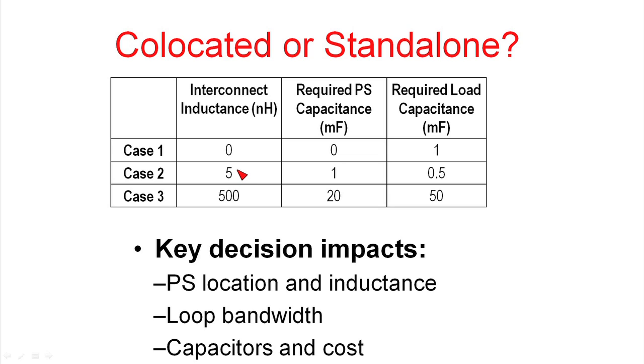Remember, we were trying to get 0.3 nanohenries inductance between the power supply and the load. Since we weren't able to do that, it required us to put some bypass capacitance at the load. This is the extreme case where we have half a microhenry of inductance. That requires a significant amount of capacitance at the load and at the power supply. You have to be able to operate your power supply without this load capacitance and have it stable with both 20 millifarads and 70 millifarads of capacitance connected.